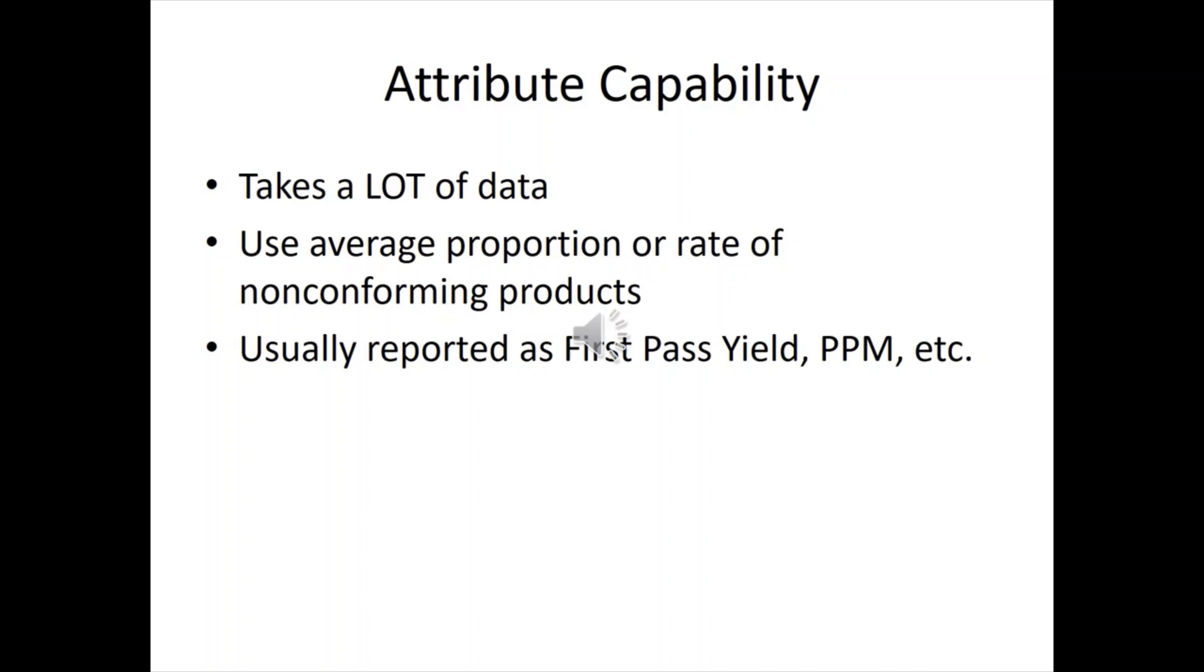Attribute capability is possible to do this, but you've got to take a lot of data because you're using proportions or the rate of non-conforming pieces. So this is like first pass yield, PPM, etc. So what you've got is discrete data. Go, no go, that type of thing. And you're trying to figure out the attributes. So what you're going to do is measure by proportions. It takes a lot of data, a lot of data.